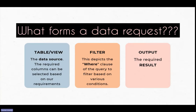A data request is formed of basically three components. First is the data source — that is, the table or the view. Second is the filter criteria, which is the condition on which we wish to filter our data — this depicts the WHERE clause of any query. And finally, the output.